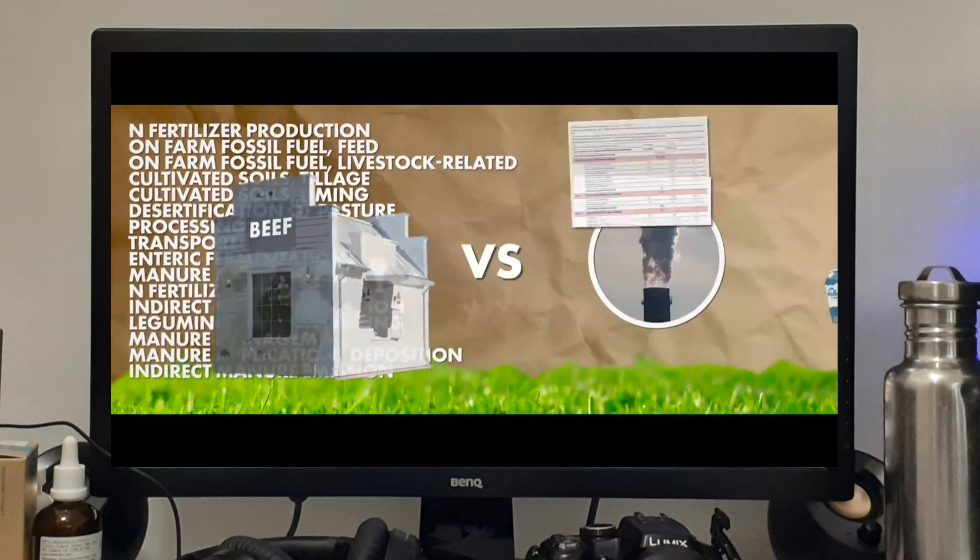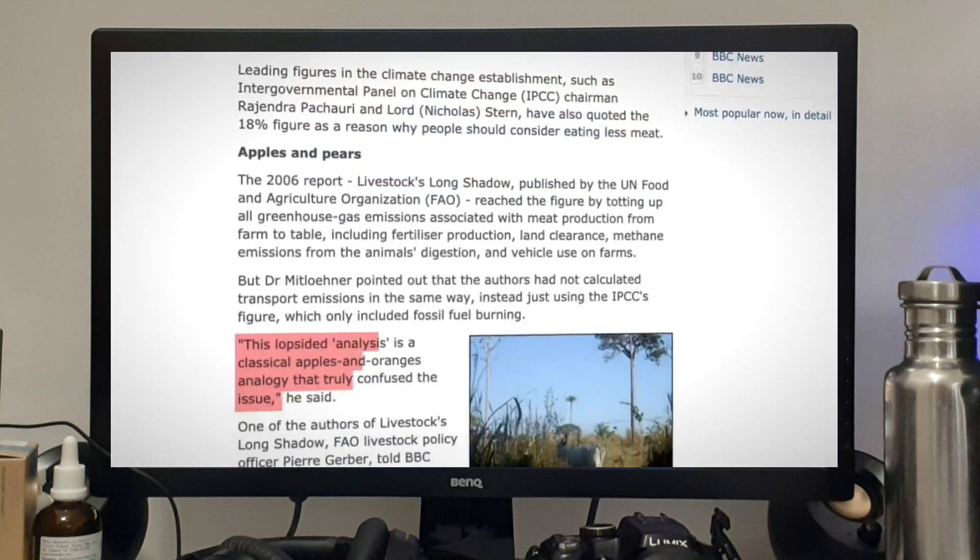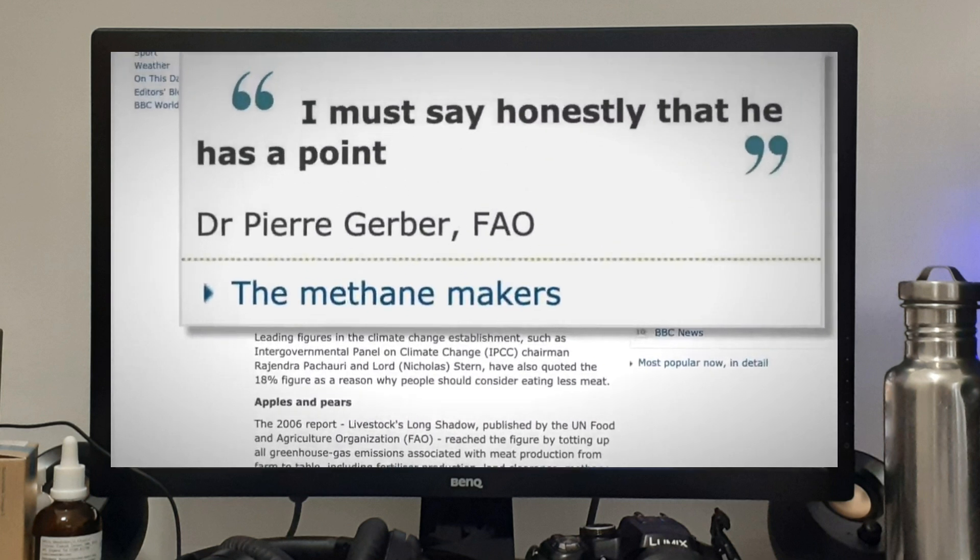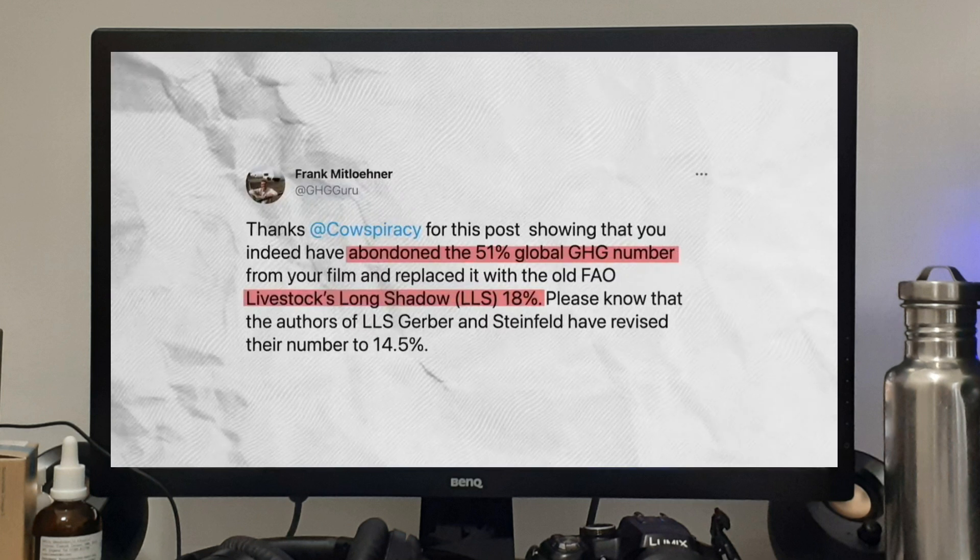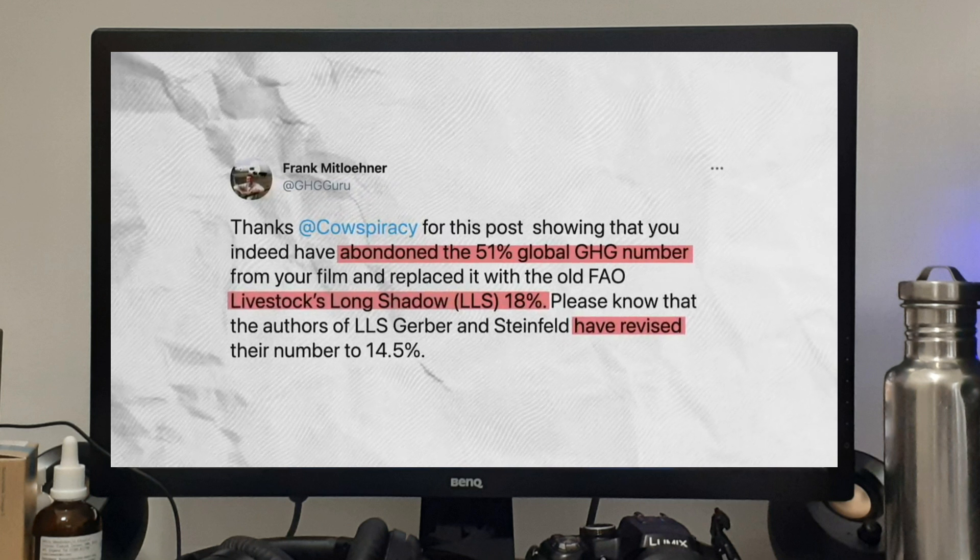But they didn't do the same thing for transportation. For transportation they only looked into tailpipe emissions. That was a classical apples to oranges comparison which I critiqued in a peer-reviewed publication and the authors conceded. They agreed with my criticism and took that comparison back. But the horse had left the barn and since then it's out roaming freely. Even though the authors had long clarified that that was probably not the right approach. By the way the 18% number of Livestock's Long Shadow had since been reduced by the Food and Agriculture Organization to 14.5%.